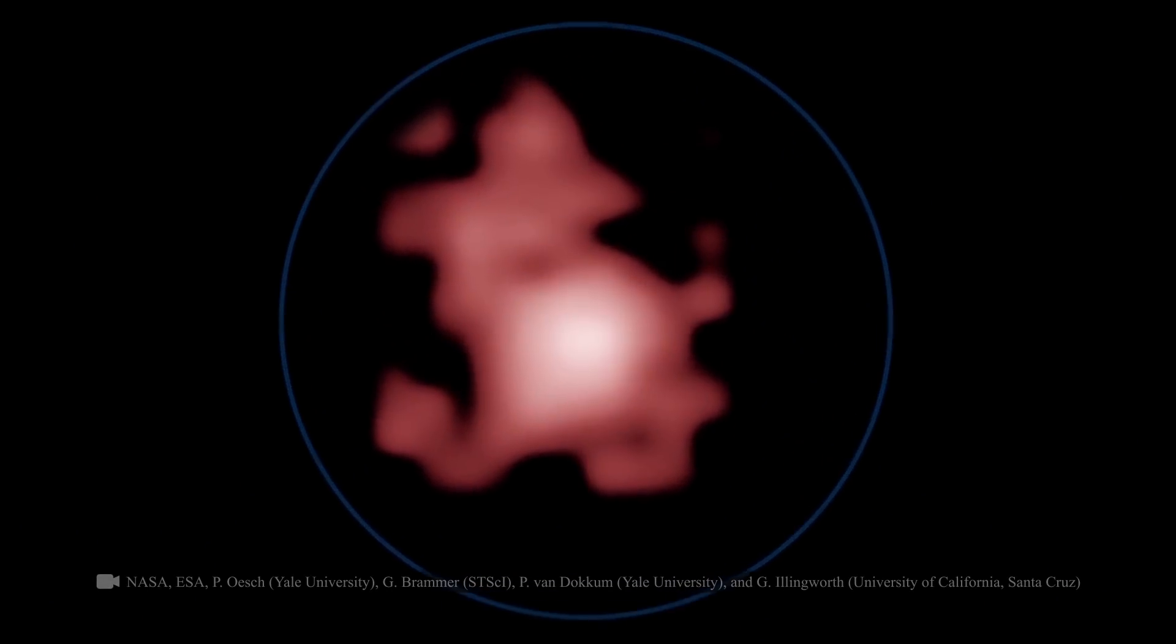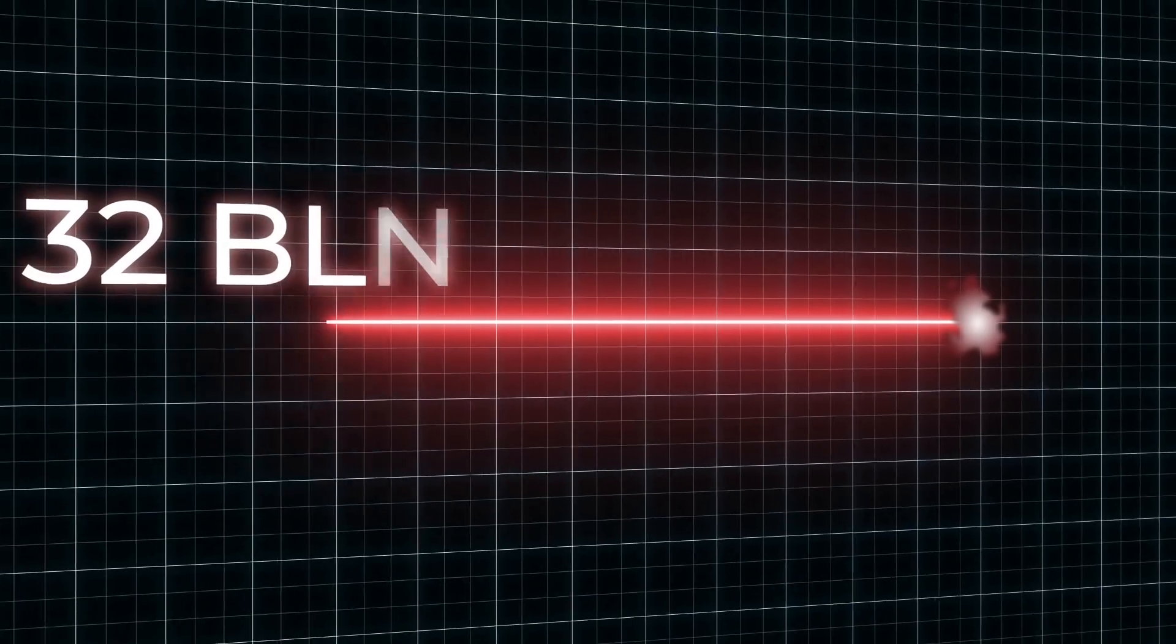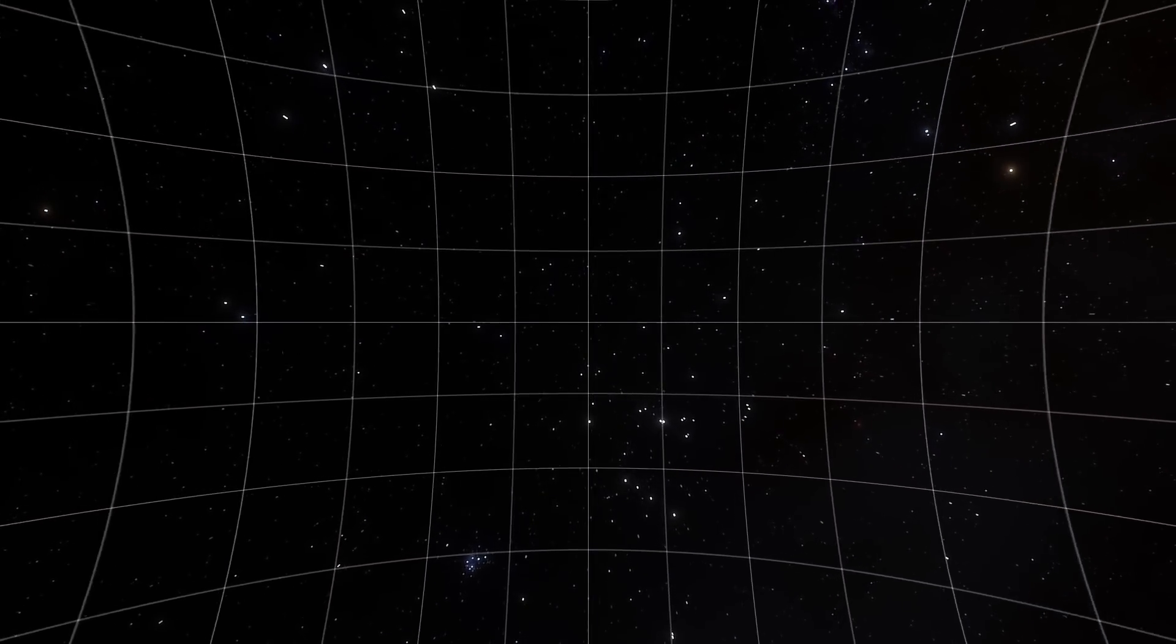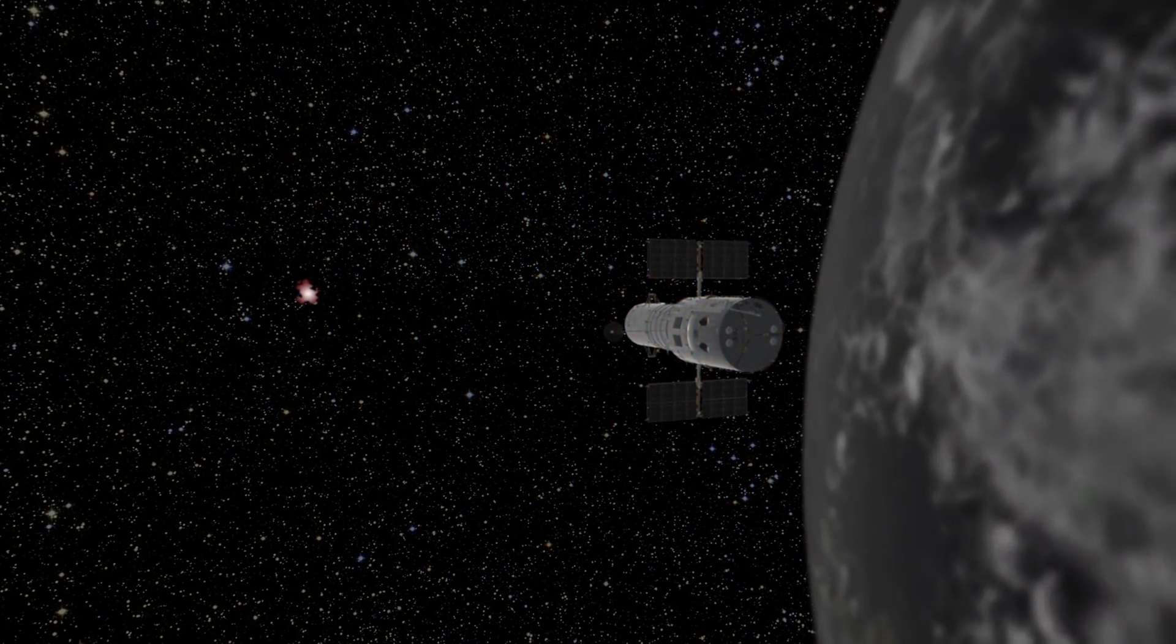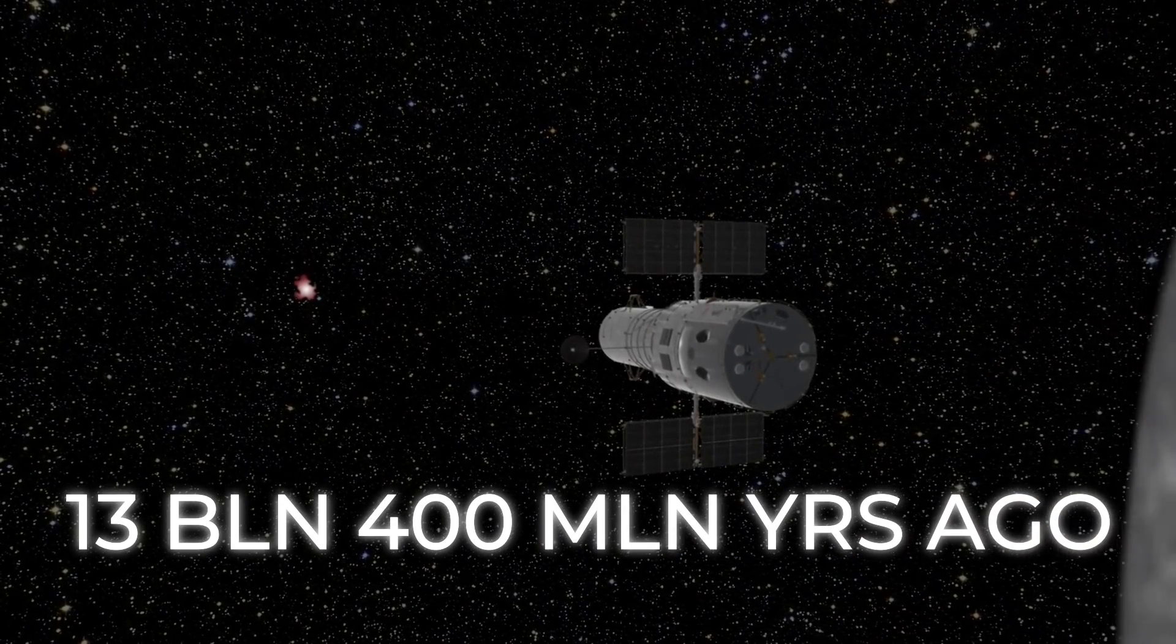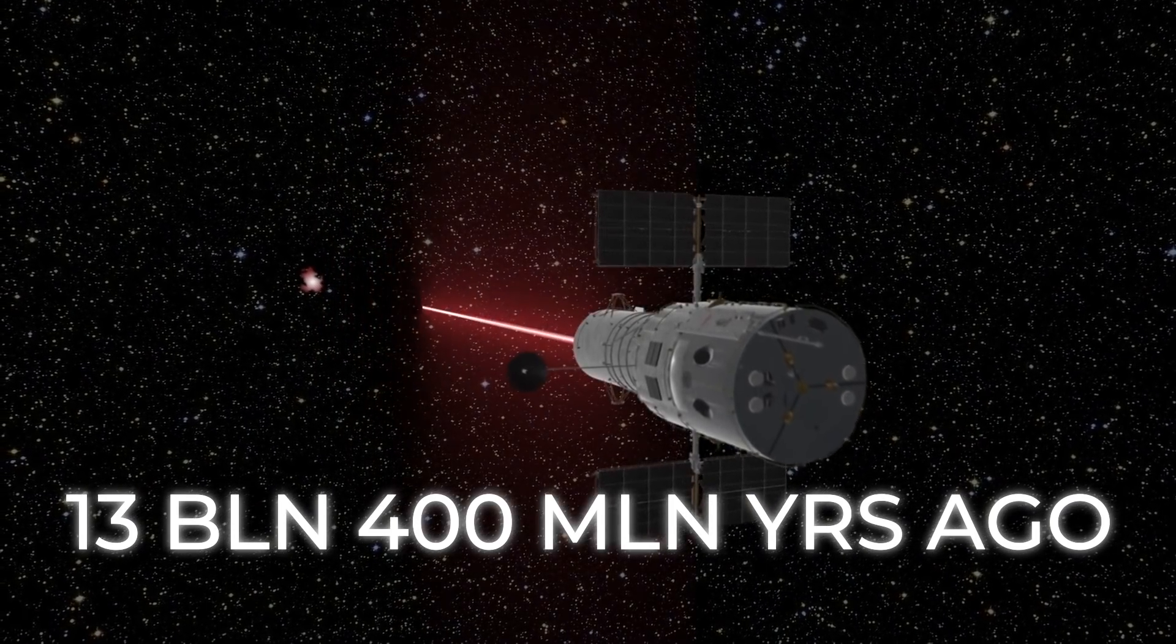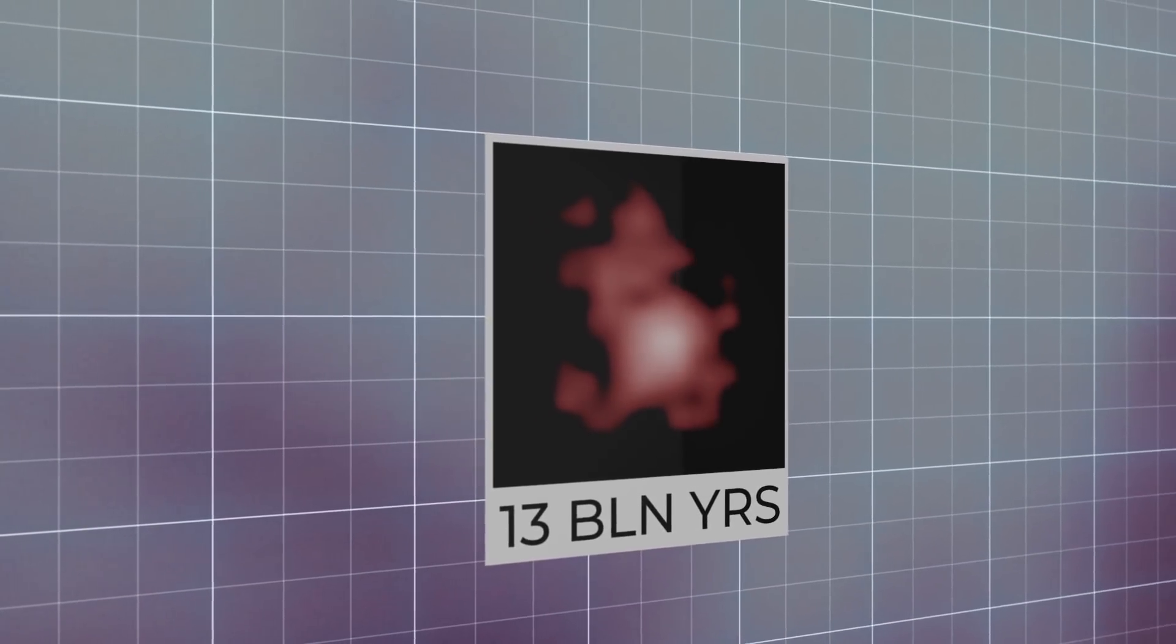GNZ 11 has the same redshift and is located at a distance of 32 billion light-years away. But don't forget about the expansion of the universe. Today, we can observe this distant galaxy in the state it was 13,400,000,000 years ago. That's about how long it took for its light to reach the Hubble telescope. So, formally, are the GNZ 11 photos over 13 billion years old?